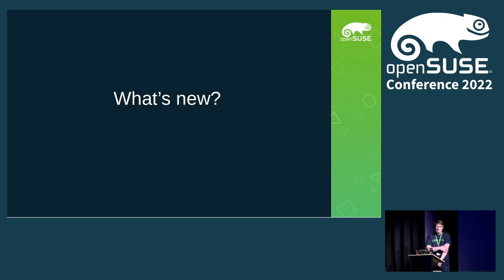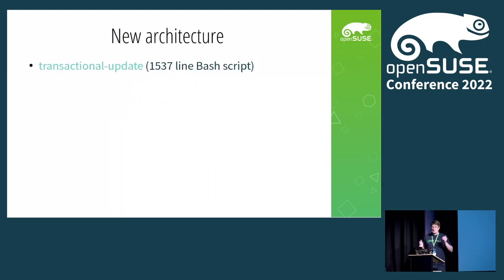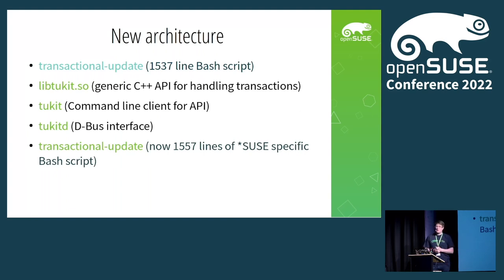Now for the fun part for those who have been using transactional update already — what's new? Basically everything. Since 2019, there has been a major redesign of the whole architecture. What is still the same is the transactional update script, which was 1,500 lines before. It just grew a bit out of the proportions of a regular bash script, and we wanted to have an API. So what I did is redesign everything in C++. We still have the transactional update bash script, which is still 1,500 lines — so I'm not sure what happened there.